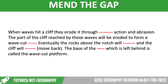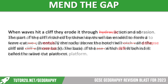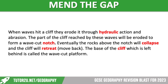We are about to reveal the answers. When waves hit a cliff, they erode it through hydraulic action and abrasion. The part of the cliff reached by these waves will be eroded to form a wave cut notch. Eventually, the rocks above the notch will collapse and the cliff will retreat or move back. The base of the cliff, which is left behind, is called the wave cut platform. Well done if you got all five of those correct.